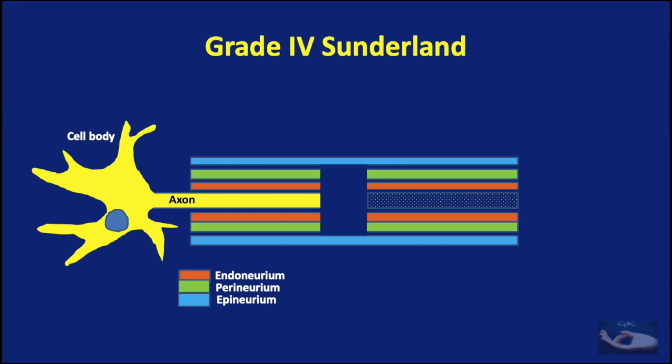Grade 4 Sunderland classification involves damage to the perineurium along with the endoneurium and the axon. The perineurium is important as it represents the extension of the blood-brain barrier. The epineurium remains, however, and scarring replaces the existing structures. Scar blocks all neuronal regeneration, and no recovery is likely without operative management.